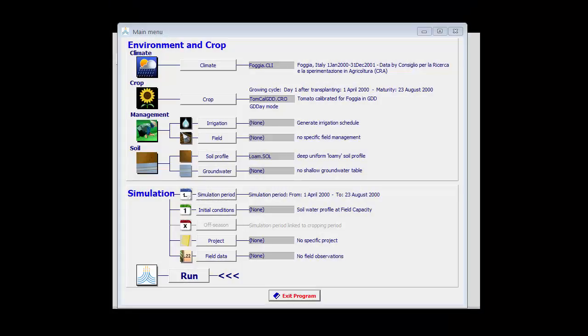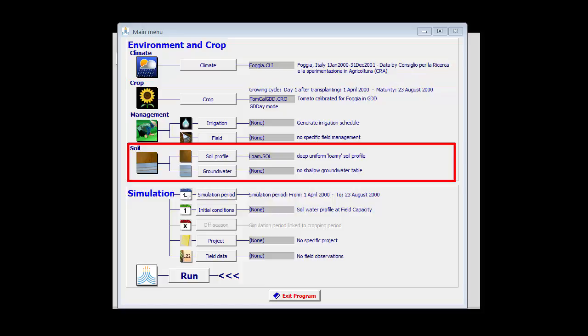To illustrate the effect of mulches, let's run the simulation of the irrigated tomatoes in Foggia. The tomatoes are cultivated on a loam soil and planted on the 1st of April. Aquacrop generates the irrigation schedule.